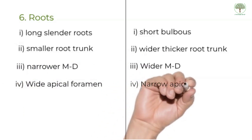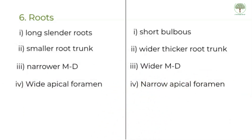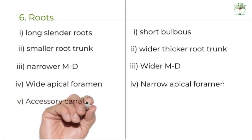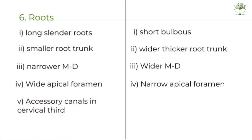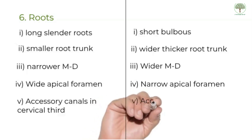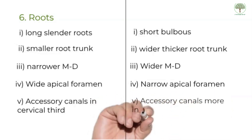The primary teeth have a wide apical foramen as compared to the permanent teeth, which have a narrow apical foramen. This is the reason we do not see localized infections in the primary dentition. The location of accessory canals is also different for the primary teeth — they are located in the cervical third of the root, and for the permanent teeth, the accessory canals are located in the apical third.